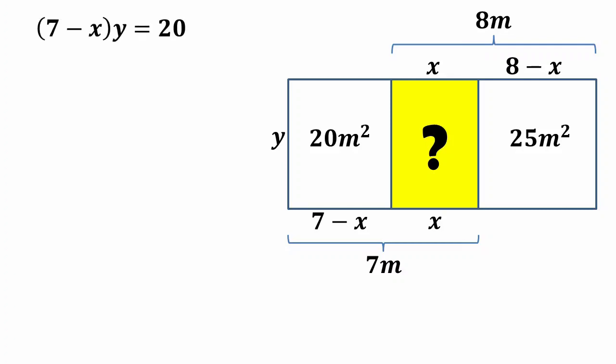This is equation 1. Also, the area of the third rectangle will be 8 minus X times Y equals 25, and let this be equation 2. The required area will be equal to XY, so we have to find XY.